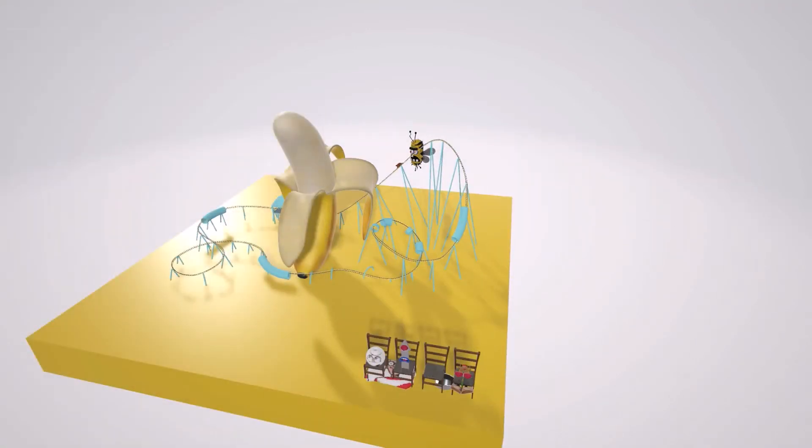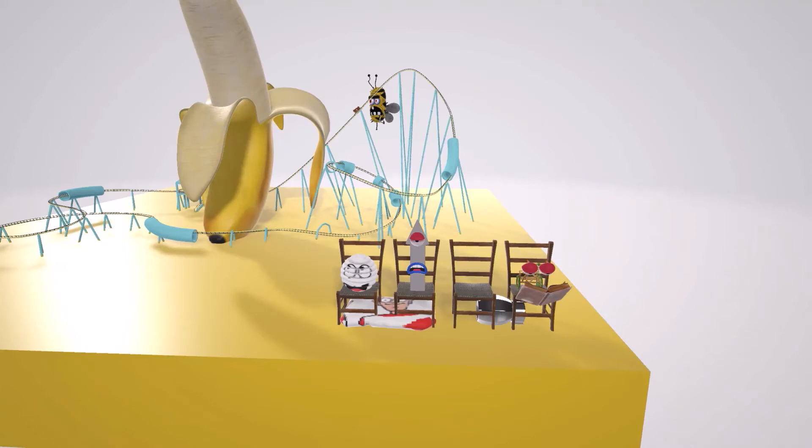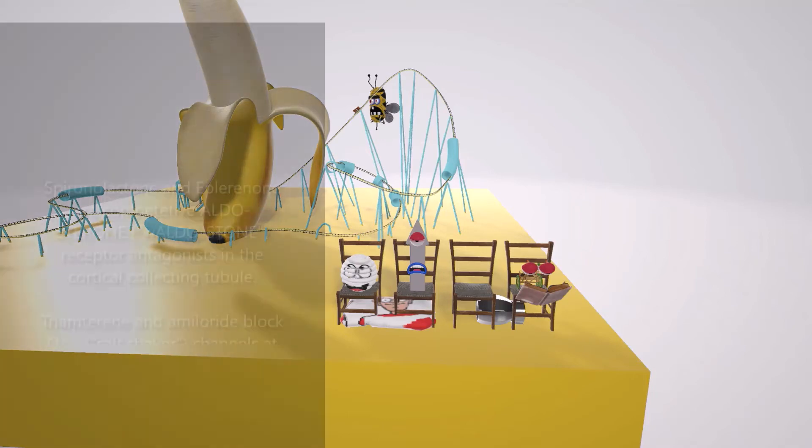Let's begin with mechanism of action. So if you'll note, spironolactone and eplerenone here are sitting on this Waldo stone. It's like a stone that's got a picture of Waldo on it. Waldo stone, or aldo stone for aldosterone.